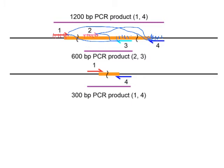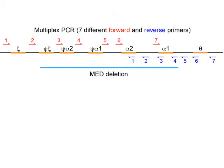On the other hand, if I have a deletion, the middle information is gone. Two and three have nothing to bind to, so I only get primer one binding to its red site and primer four binding to its blue site. I get a much simpler product — only this 300 base pair product — even though I used all four primers. Two and three don't do anything in this reaction.